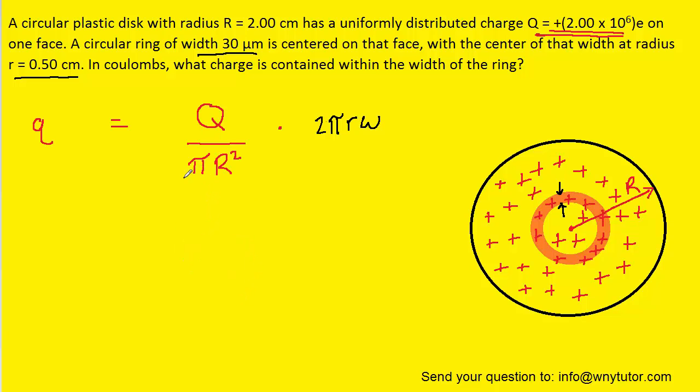And conveniently, the π's will actually cancel away. And then we can plug in the total charge capital Q, the width, the small radius of the circular ring, and then the large radius of the entire circular plastic disc.